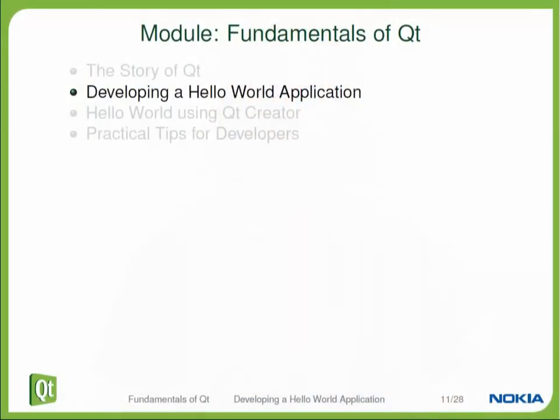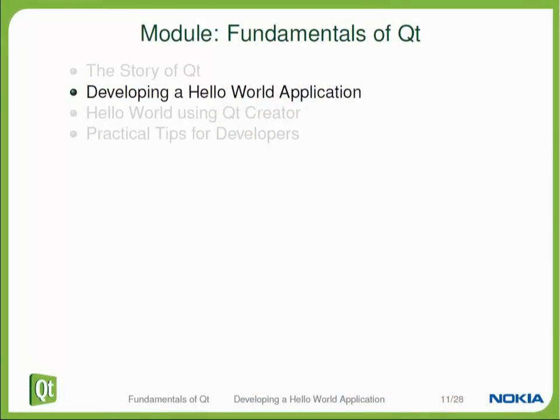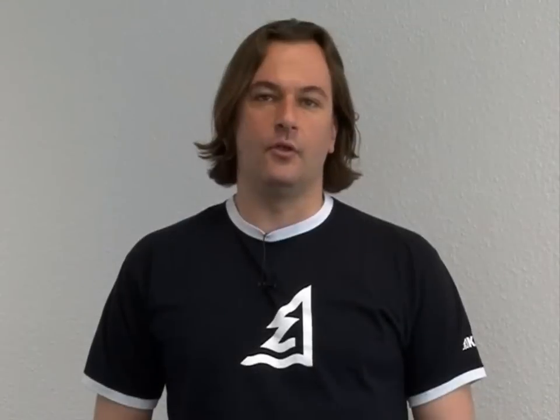In this first video, we will introduce you to writing your first Qt application. As in every decent programming class, this will be the Hello World application. To write this application in Qt, you need to know about two concepts: you need to write the source code itself, and you also need a way to build the source code on your operating system. Qt is a toolkit to develop applications for several different target platforms, which means we need a common way for all target operating systems to build the software.